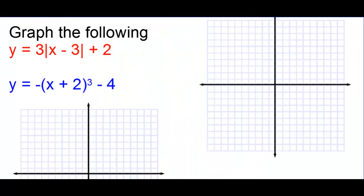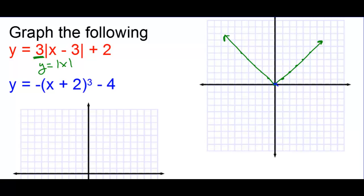Graph the following. We're going to start with the absolute value. The parent graph is y equals absolute value of x. Absolute value of 1 is 1, 2 is 2, 3 is 3, 4 is 4. Then on the negative side, absolute value of negative 1 is 1. And we're going to stretch vertically by a factor of 3 — multiply all y-values by 3. So 1 goes to 3, 2 goes to 6, 3 goes to 9.